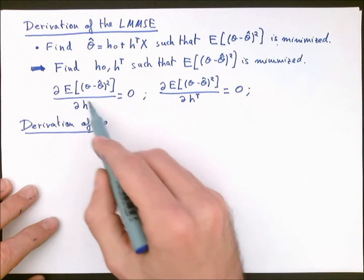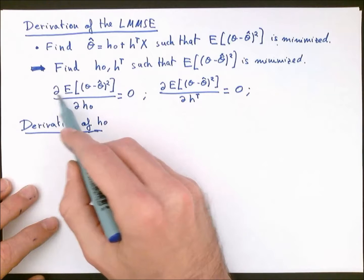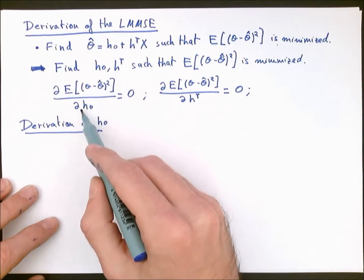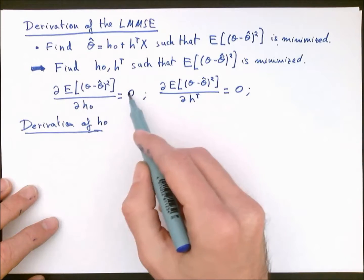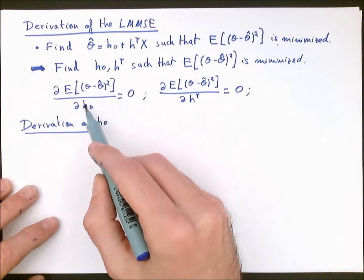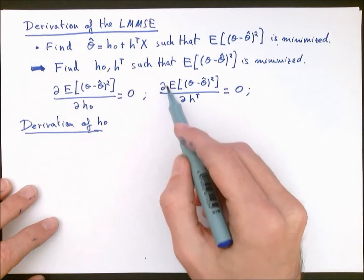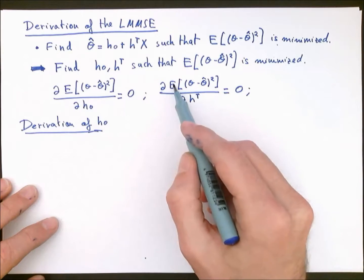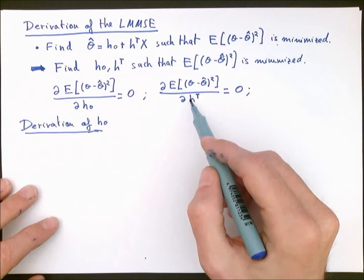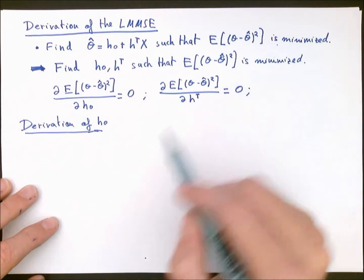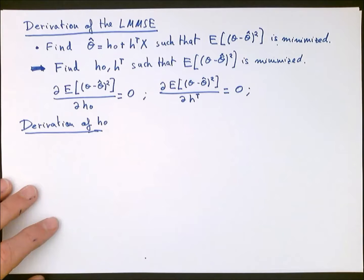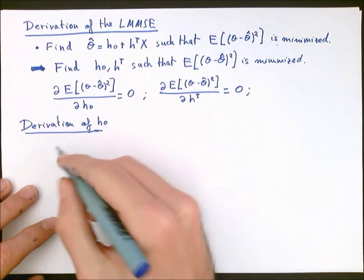We will first differentiate the mean squared error with respect to H0, set it equal to zero, and solve for H0. Later we will take the derivative of the mean squared error with respect to the vector H transposed, equate to zero, and solve for it. Let's start with the derivation for H0.